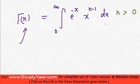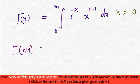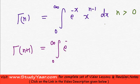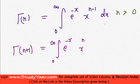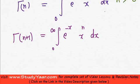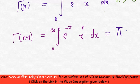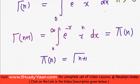So if gamma of n is this, what would be gamma of n plus 1? Gamma of n plus 1 is going to be the integral from 0 to infinity of e raised to power minus x, x raised to power n plus 1 minus 1, which is x raised to power n, dx. This is also known as the pi function, so your pi of n equals gamma of n plus 1.